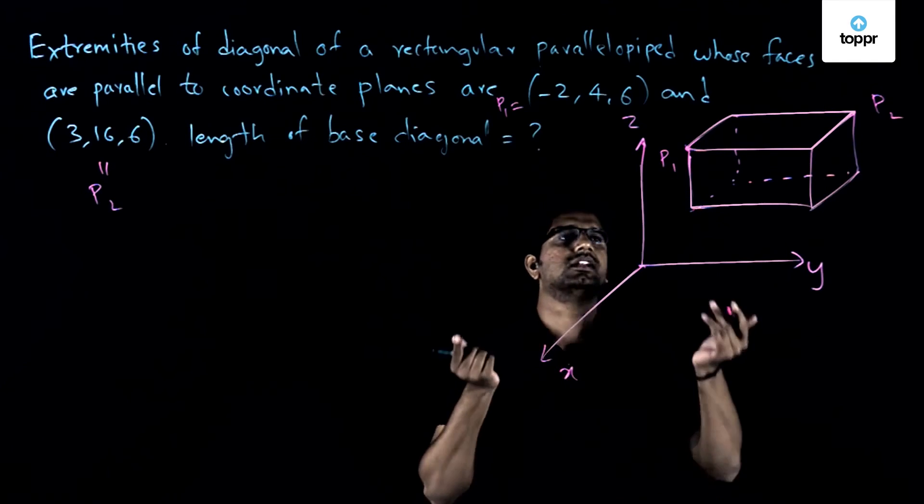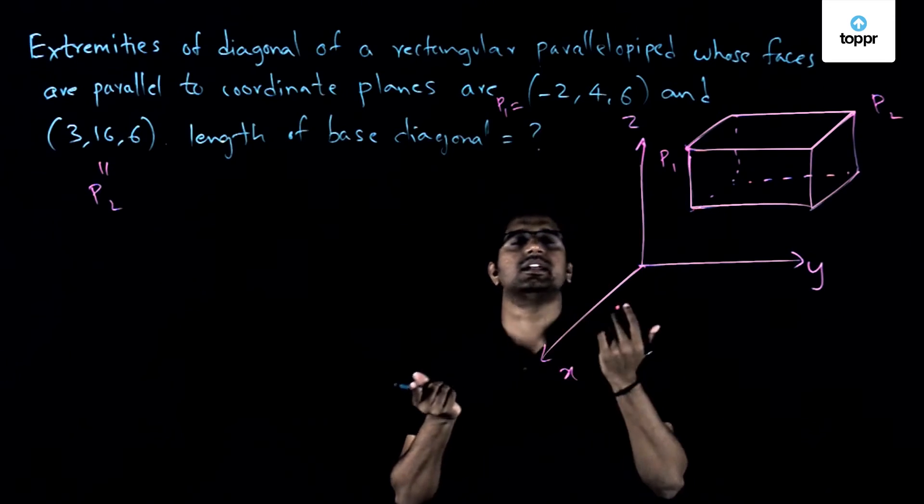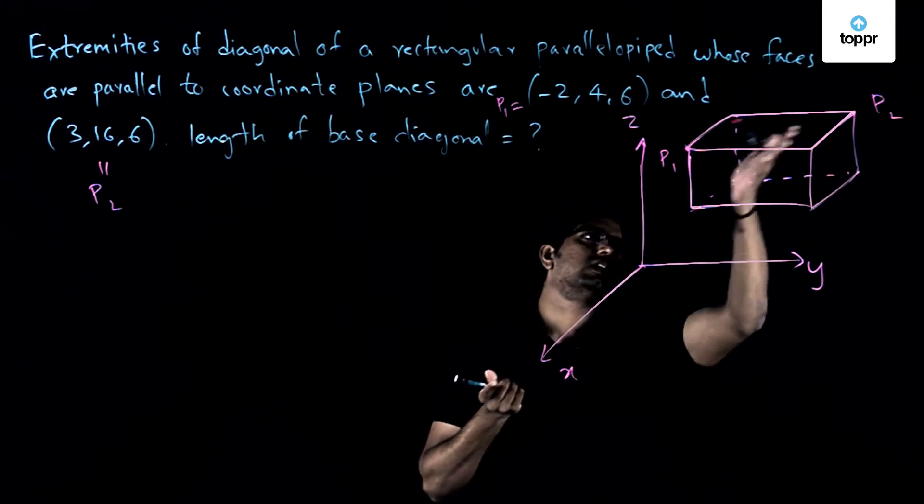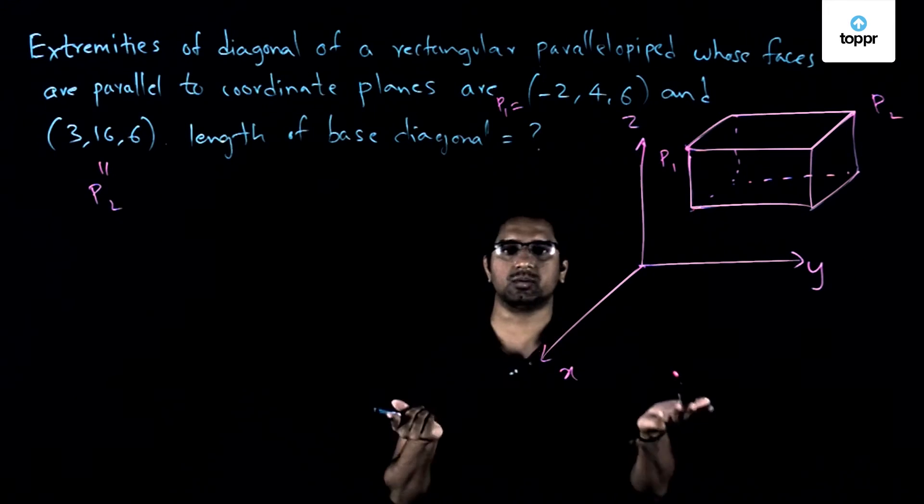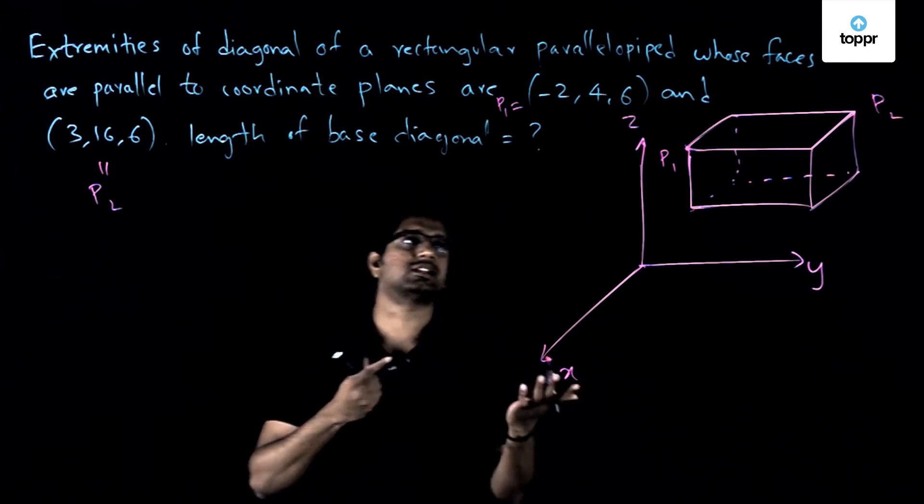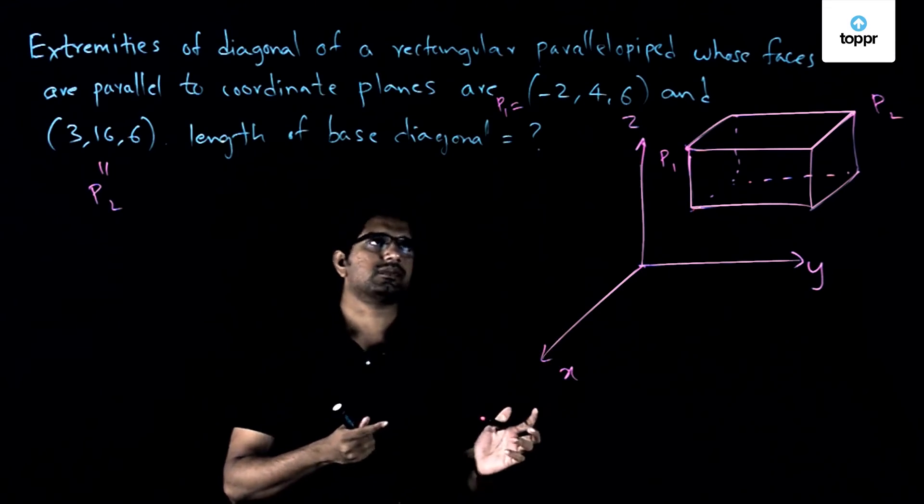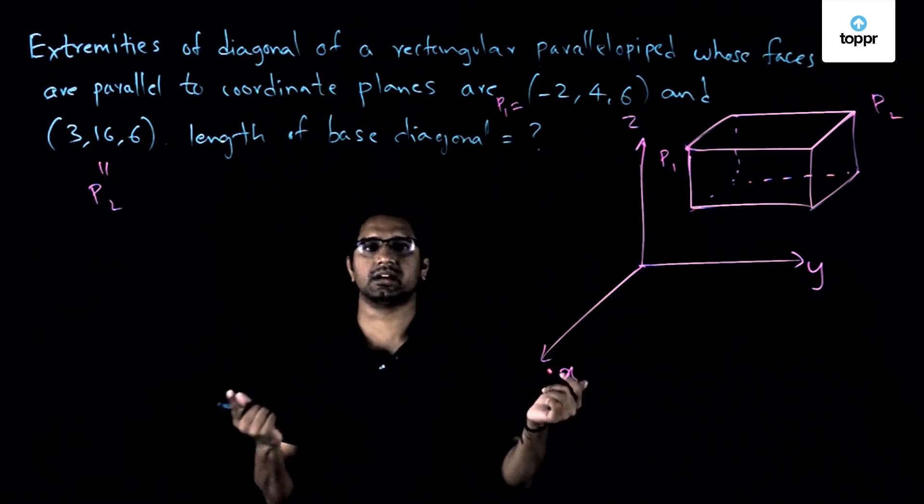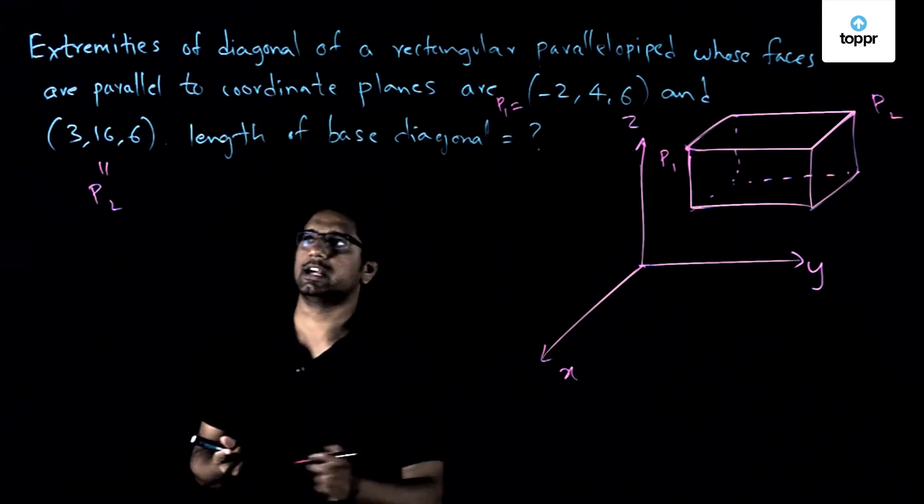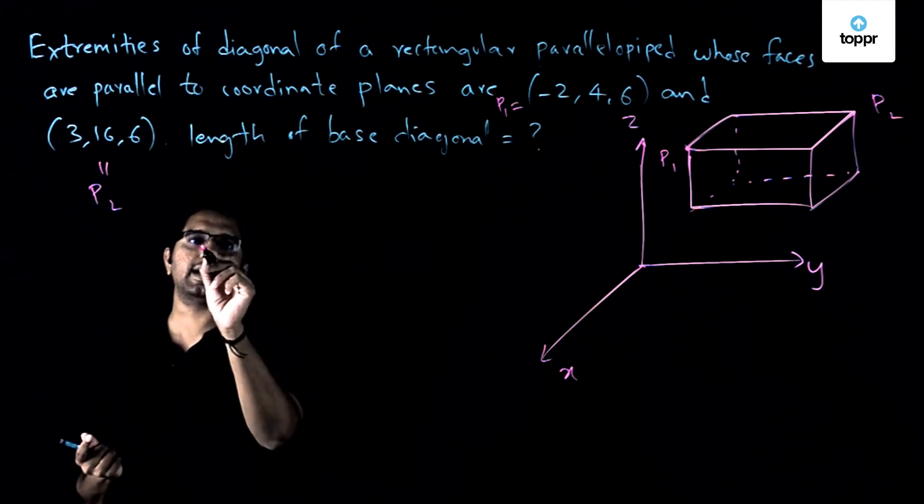So what it means is all that we need to do is to find the length of the distance between P1 and P2, that's all is the question, actually just that it has been asked indirectly. And for that we very well have the distance formula and one can immediately use the distance formula.